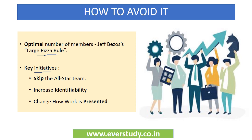Toh pahla initiative is skip the all-star team. That is ensuring ki single team mein saare best performers na ho. Because research suggests performers tab hi achha kaam karte hai jab unhye lagta hai ki team mein dousre log theek se kaam nahi kar sakte hai. Toh best performers apni responsibility feel karte hai to pull the productivity of the team up. Wahi agar saare star performers huye team mein, then it will result into social loafing. Next initiative as we saw is increasing identifiability, kyunki people are concerned with how others evaluate them and therefore when people's own name and identity is tied to a specific part of a project, woh zyada effort daalte hai us kaam ko achche se karne ke liye.